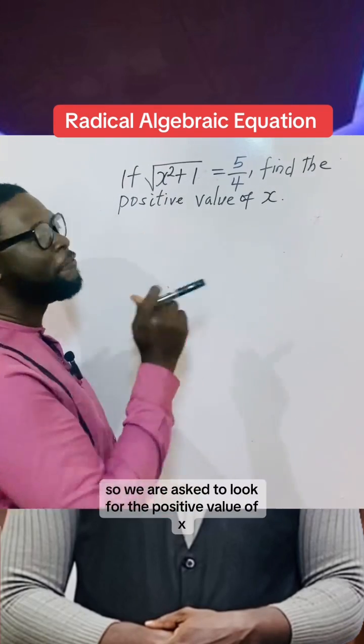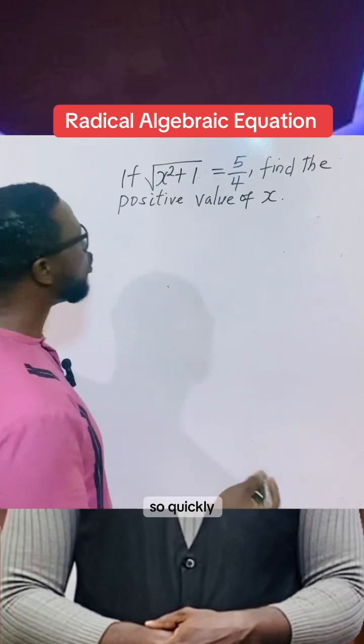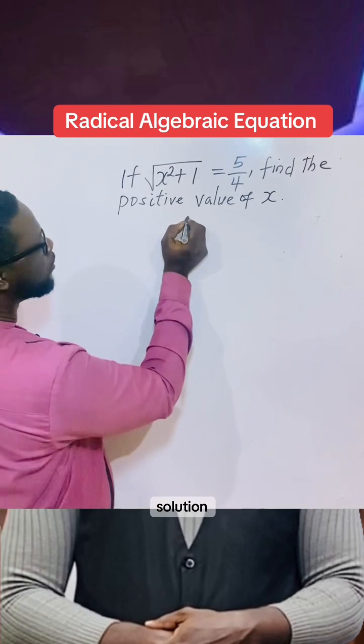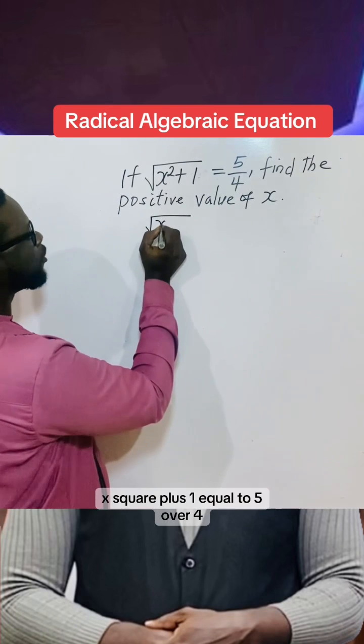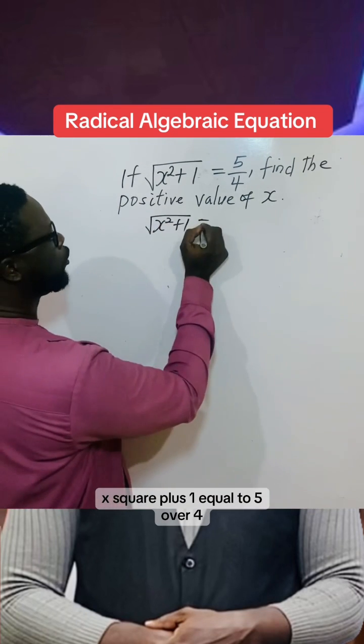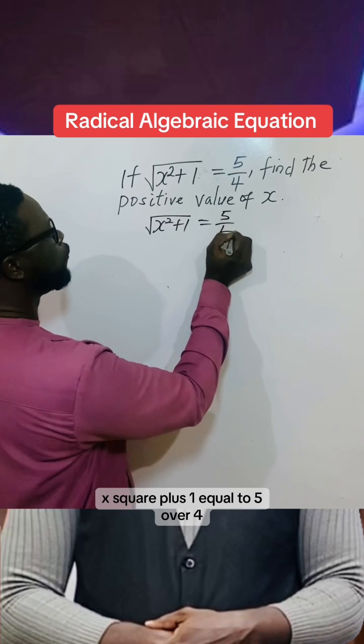We are asked to look for the positive value of x. So quickly, the solution: We write down the equation √(x² + 1) = 5/4.